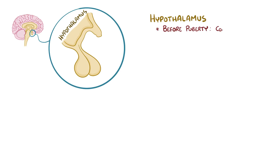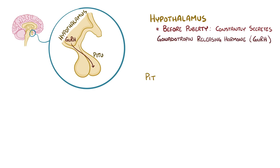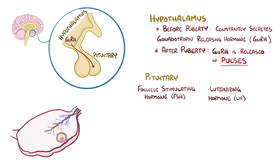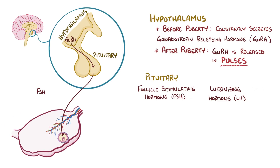The menstrual cycle is ultimately controlled by the hypothalamus, which is at the base of the brain. Before puberty, the hypothalamus constantly secretes small amounts of gonadotropin releasing hormone, or GnRH. That GnRH travels to the nearby pituitary, which secretes two hormones of its own: follicle-stimulating hormone, or FSH, and luteinising hormone, or LH. Once puberty hits, the hypothalamus starts to secrete GnRH in pulses — sometimes more and sometimes less — and the pituitary FSH and LH make the ovarian follicles develop. The amount of GnRH can be mapped out like a wave over time, and the frequency and amplitude of those waves determine how much FSH and LH get produced by the pituitary.